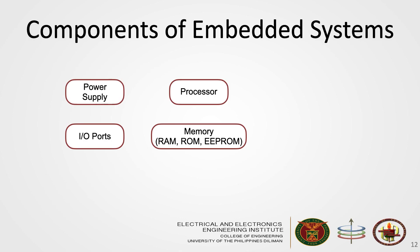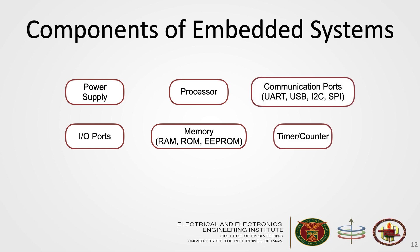Just like other computer systems, embedded systems have the following components: a power supply, a processor and memory — usually RAM, ROM, and EEPROM — and of course the input/output ports or IO ports. To make sure that outputs meet the deadlines, there should be a timer or counter block. It also needs communication ports like UART, USB, I2C, SPI, etc., to be able to communicate with other embedded devices. It will also have an ADC or DAC if it has analog inputs or outputs, and we will discuss this more in detail in the middle of our course.